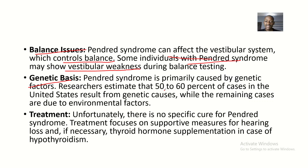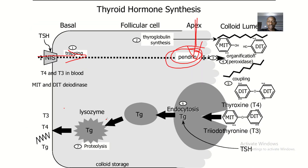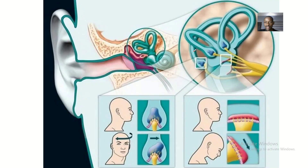Pendred Syndrome is primarily caused by genetic factors. Researchers estimate that 50 to 60 percent of cases in the United States result from genetic causes, while the remaining cases are due to environmental factors. Unfortunately, there is no specific cure for Pendred Syndrome. Treatment focuses on supportive measures for hearing loss and, if necessary, thyroid hormone supplements in cases of hypothyroidism.